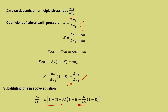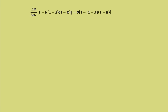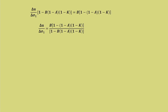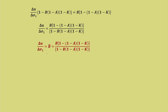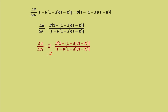Substituting the stress ratio expression and rearranging to isolate delta u / delta sigma 1, we get: B-bar = B × [1 - (1-a)(1-k)] / [1 - B(1-a)(1-k)]. This is the same overall pore pressure parameter B-bar, but now expressed in terms of the coefficient of lateral earth pressure k instead of the principal stress ratio.